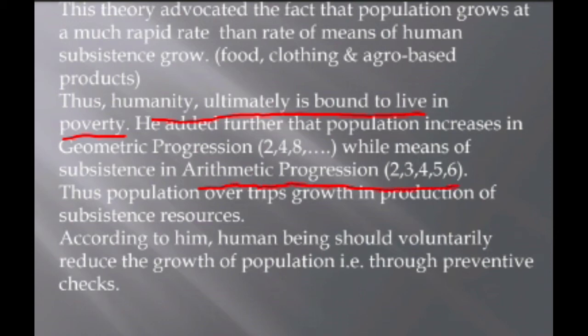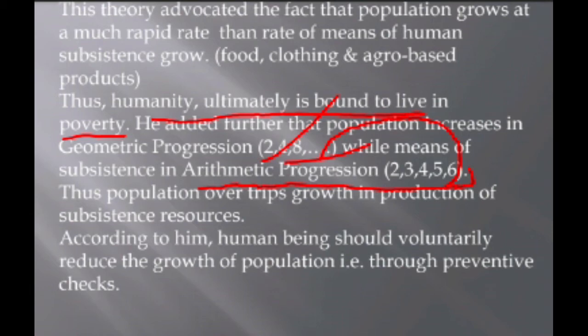The means of subsistence, according to Malthus, grows only in Arithmetic Progression — for example, 2, 3, 4, 5, 6. Since population growth cannot equal subsistence growth, the poverty level will grow. He was not entirely wrong, but the problem is that technology has since changed things. He said population outstrips growth in production of subsistence, eventually exhausting resources.